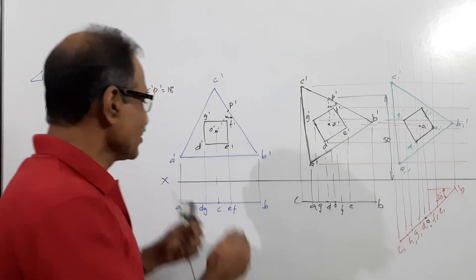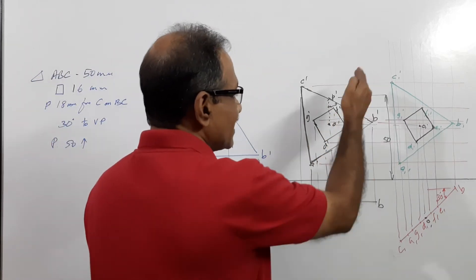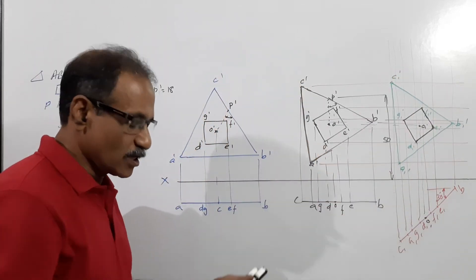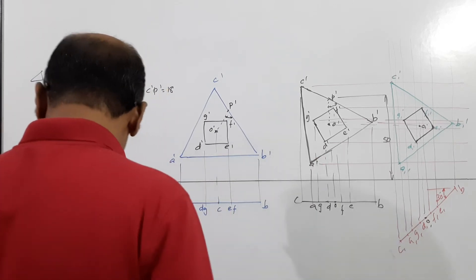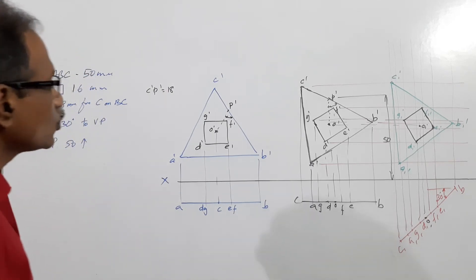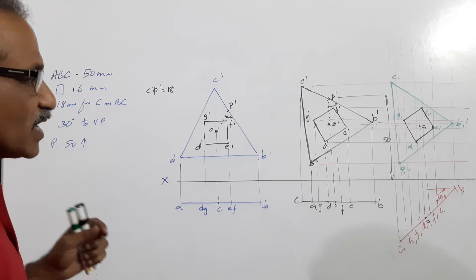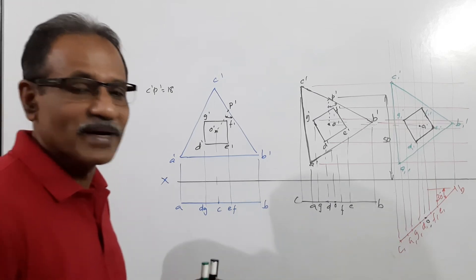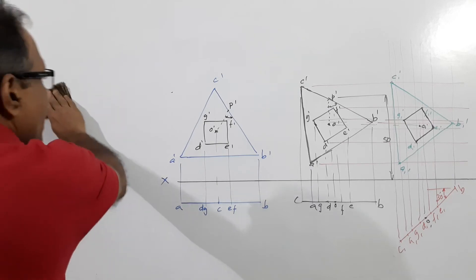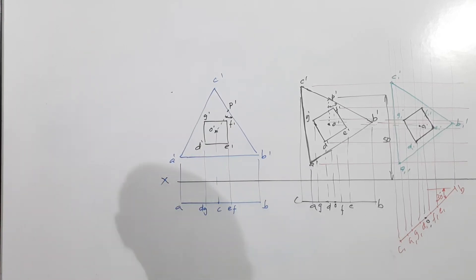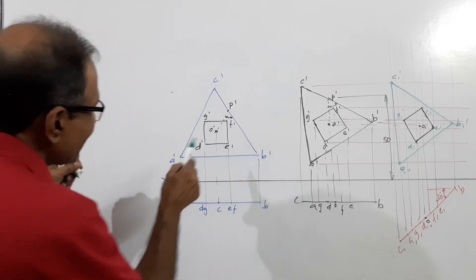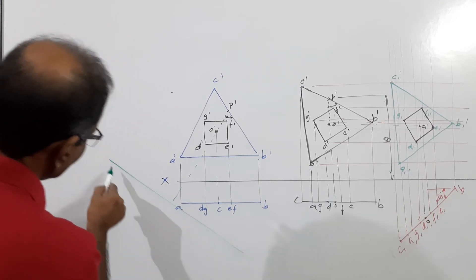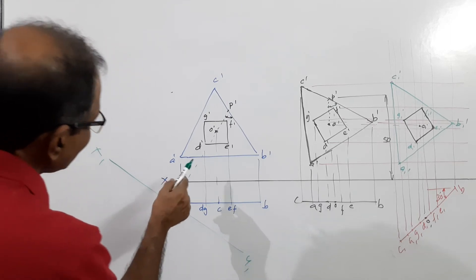This is a very interesting question: you draw this, tilt it, satisfy the suspension condition, draw the plan, redraw the plan, and project the elevation. We have adopted the redrawing method. Now, if you do this by the auxiliary projection method it becomes extremely easy. I have left space on this side to enable us to use the auxiliary projection method.